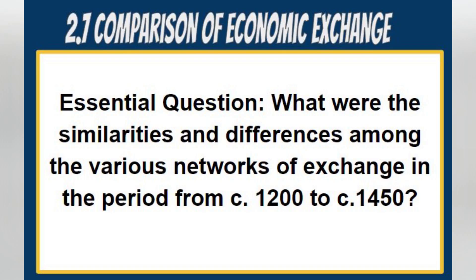AP World History Topic 2.7: Comparison of Economic Exchange. Essential question: what were the similarities and differences among the various networks of exchange in the period from circa 1200 to circa 1450? You might want to draw a Venn diagram for this one.